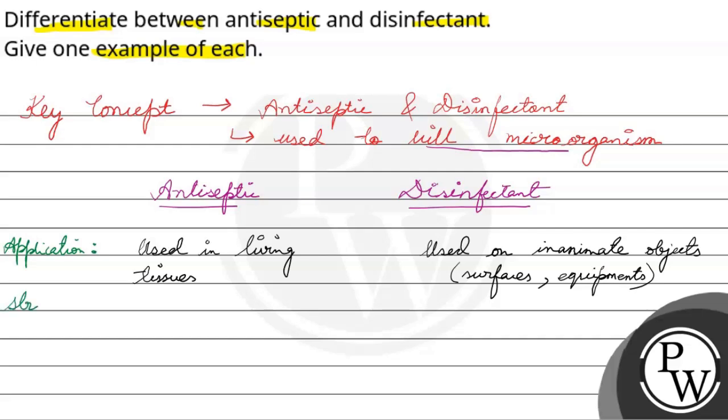Now, let's look at the strength. The strength is antiseptic is less potent. Disinfectant is more potent, which means more powerful. That's why it is not used in living tissues.